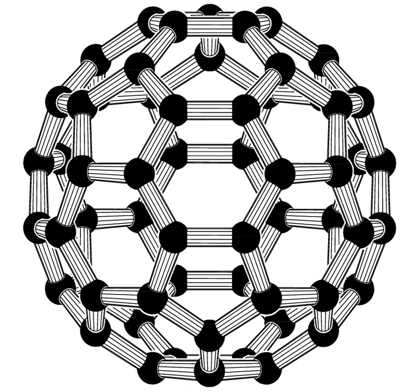Buckminster fullerene is a type of fullerene with the formula C-60. It has a cage-like fused ring structure that resembles a soccer ball, made of 20 hexagons and 12 pentagons, with a carbon atom at each vertex of each polygon and a bond along each polygon edge.